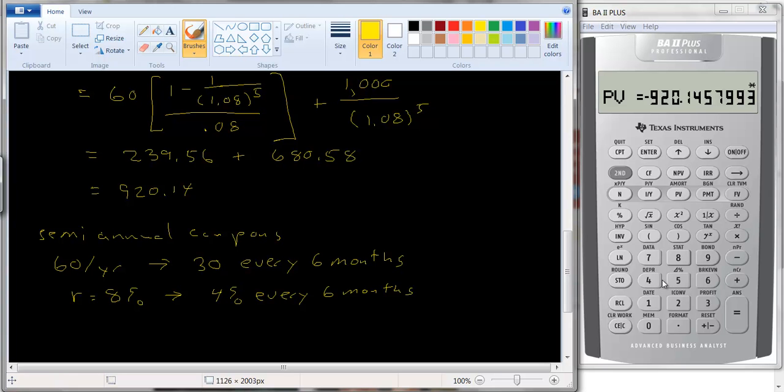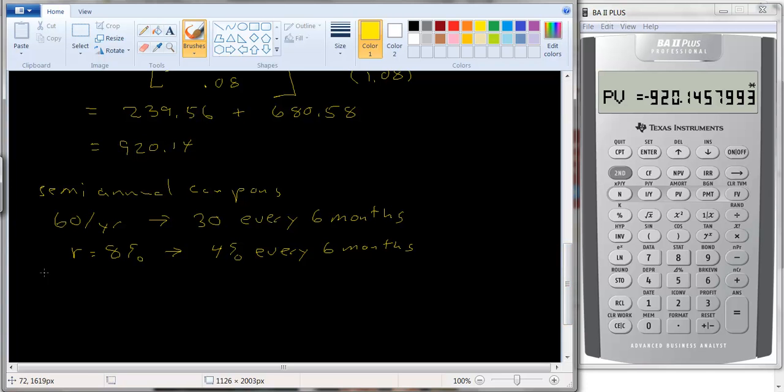And again, it's just another present value equation. We should get a price that's close to $920.14, but not exactly. And our equation is going to look like this. Price of the bond equals 30 divided by 1.04 plus 30 divided by 1.04 squared, plus 30 divided by 1.04. And remember, now instead of having five years, we have 10 six-month periods. So this is going to be 10. So don't forget to do that. And the final cash flow is the 1,000 divided by 1.04 to the tenth power.